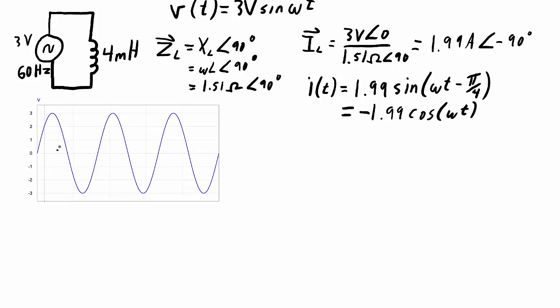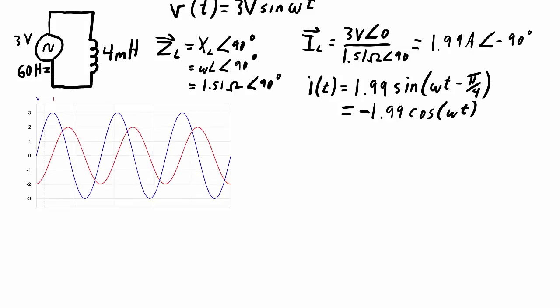I'm writing it out in that form because I am going to plot that current on the graph. Knowing that it's a negative cosine function helps me recognize what the shape of that equation looks like in graphical format. I've added current to the graph and you can see that the current is lagging the voltage by 90 degrees.